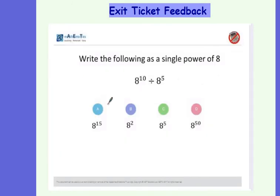And for the last question, I asked you to write the following as a single power of 8. I've got 8 to the power 10 divided by 8 to the power 5. This time we can use our division law with indices. So that gives us 8 to the power 10 take away 5, which gives us 8 to the power 5.